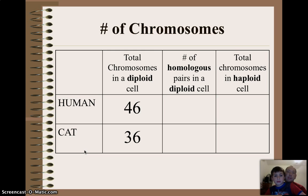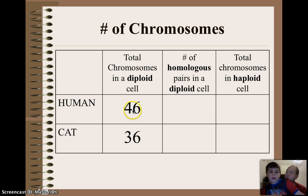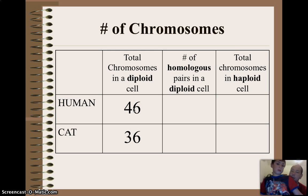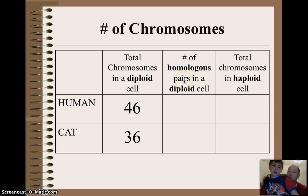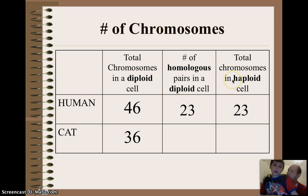So let's take a look here. We have a human here — they have 46 chromosomes in every one of your cells. Wow. Pretty crazy. Now, how many pairs of chromosomes are we going to end up with? 23. And so how many total chromosomes are in a haploid cell? 23.